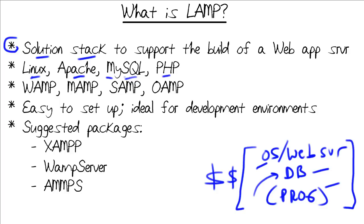Folks get kind of funny with their terminology. Depending upon which host operating system is in place, you have different acronyms. WAMP is simply the same stack in terms of MySQL, Apache, and PHP, but on Windows. M is Mac, S is Solaris. You'll find the vast majority of them are either LAMP, WAMP, or MAMP.